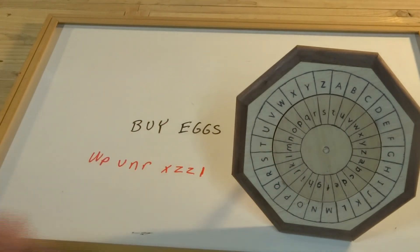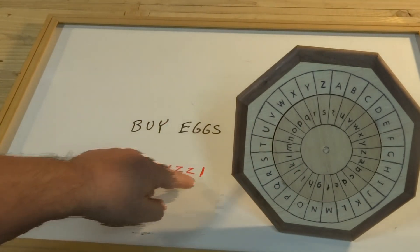So buy eggs turns into WP, U, N, R, X, Z, Z, L.